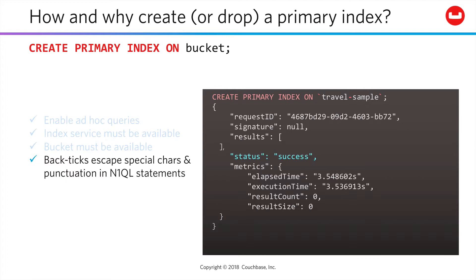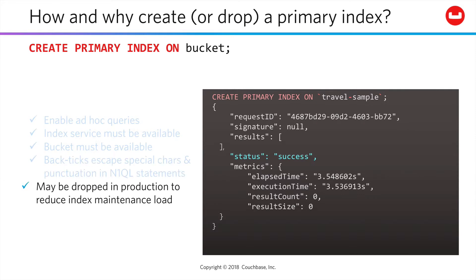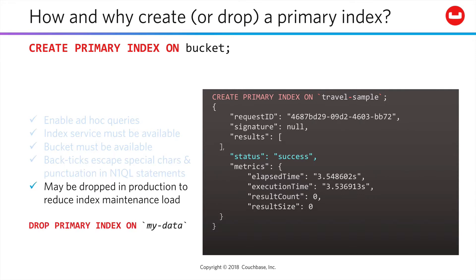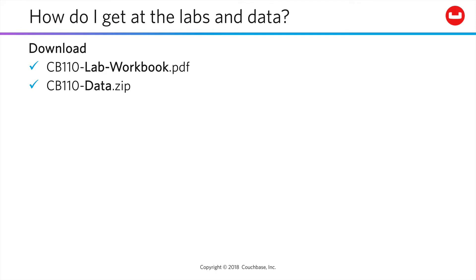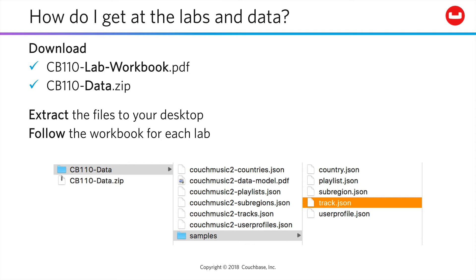Now, as with any index, there is maintenance overhead. So the primary index would normally be dropped on production machines to reduce index maintenance load. To get at the labs and sample data for this course, download the workbook and data files from the introduction lesson in the learning management system — that's the lesson before this one. Extract the data files to your desktop and just follow the workbook steps for each lab.